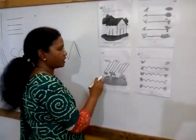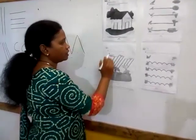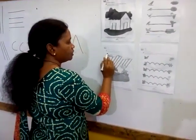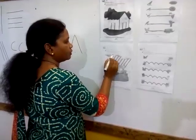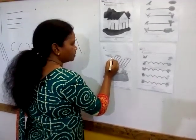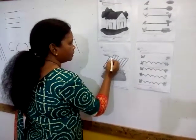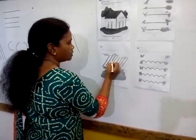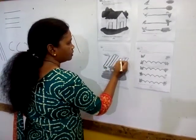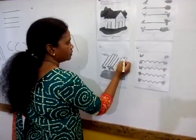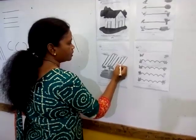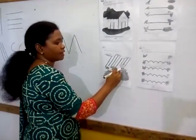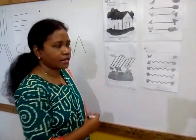Next is slanting line. Trace the dotted lines to show the rain. One has been done for you. Slanting line, slanting line, slanting line, slanting line, slanting line. This line is known as slanting line.